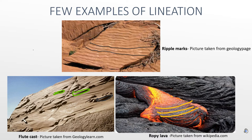Here are some general examples of lineation which occur in igneous and sedimentary rocks. For example, in the first picture, which is of sedimentary rock, we can see the lineation in the form of ripple crest marks.